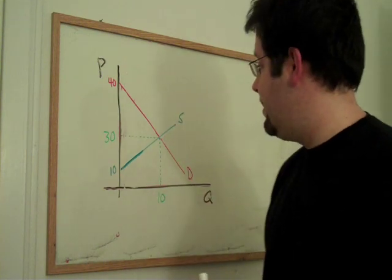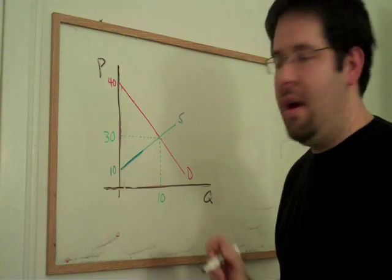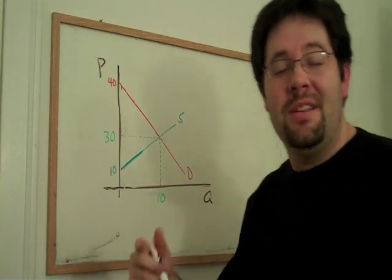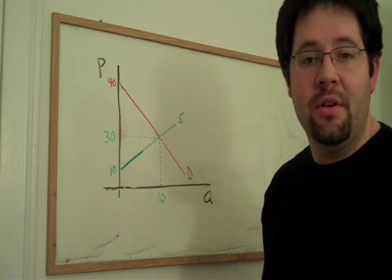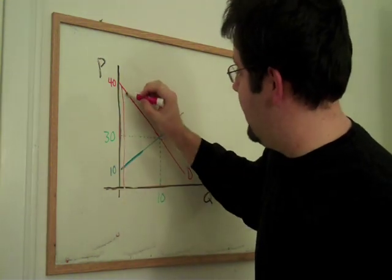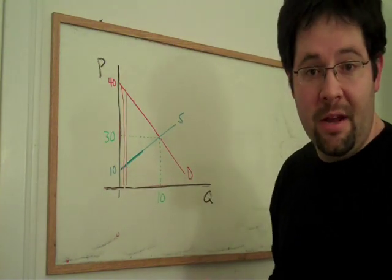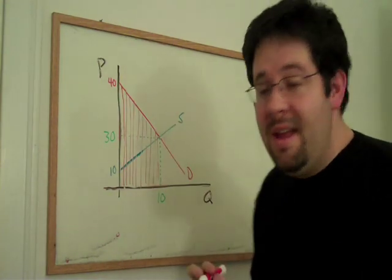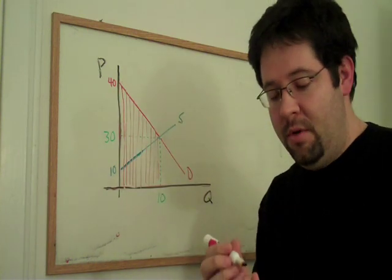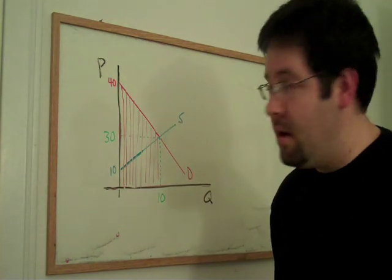An alternative way to visualize it is to ask ourselves how much is it worth to the consumers if we just gave these consumers these 10 units. The first unit was worth all the way up to the demand curve there. The second unit was worth all the way up to the demand curve there. We'll trace in this whole region here, the value to the consumers of the product.